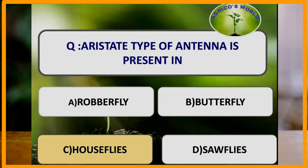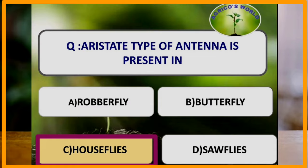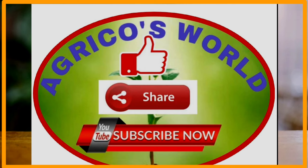Aristate type of antennae are present in which of the following? Aristate antennae are present in houseflies. In aristate antennae, the antennae are small, microscopic, and three-segmented, in which the third segment is enlarged and bears a bristle-like arista on its dorsal side. Please like, share, and subscribe to our channel Agricose World.